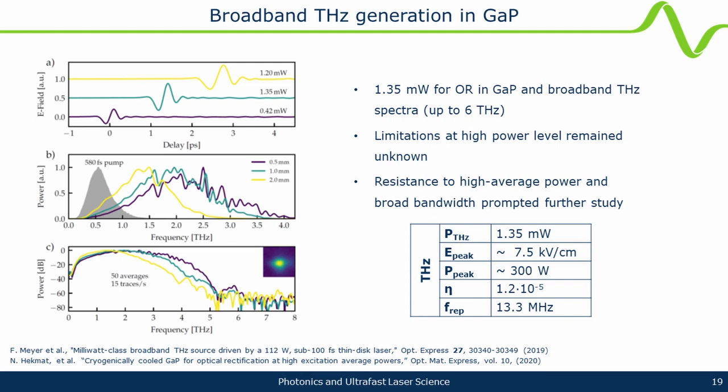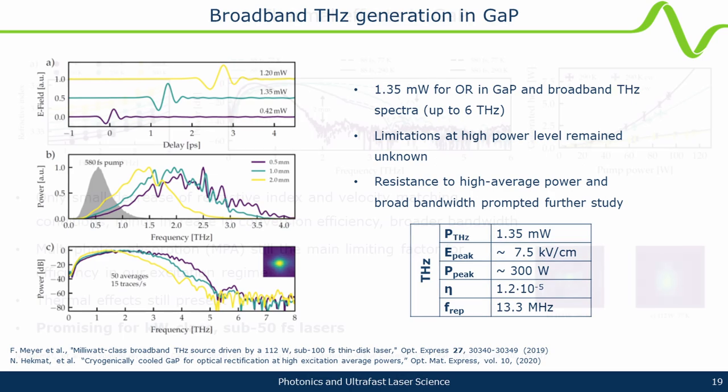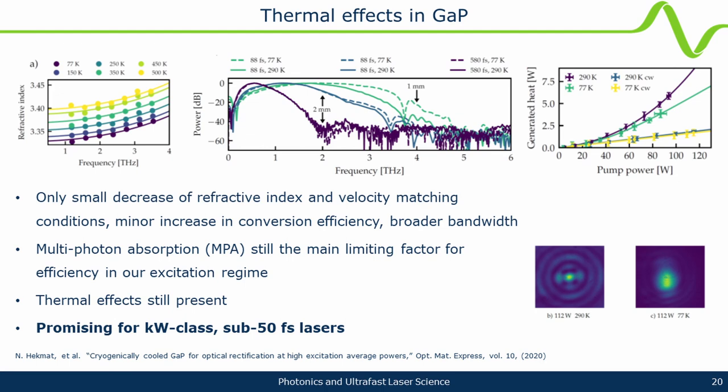The conversion efficiencies we get are around 10^-5, typical for other low-power sources — this didn't change much. We end up with a nice milliwatt-level broadband source. There was no literature on the refractive index change with temperature, so we measured this with our TDS. We also explored bandwidth changes as you cool down — as expected, things get more broadband. The nicest finding was understanding whether linear or nonlinear absorption limits us — using a cryogenic chamber to measure deposited heat by comparing CW and mode-locked lasers.